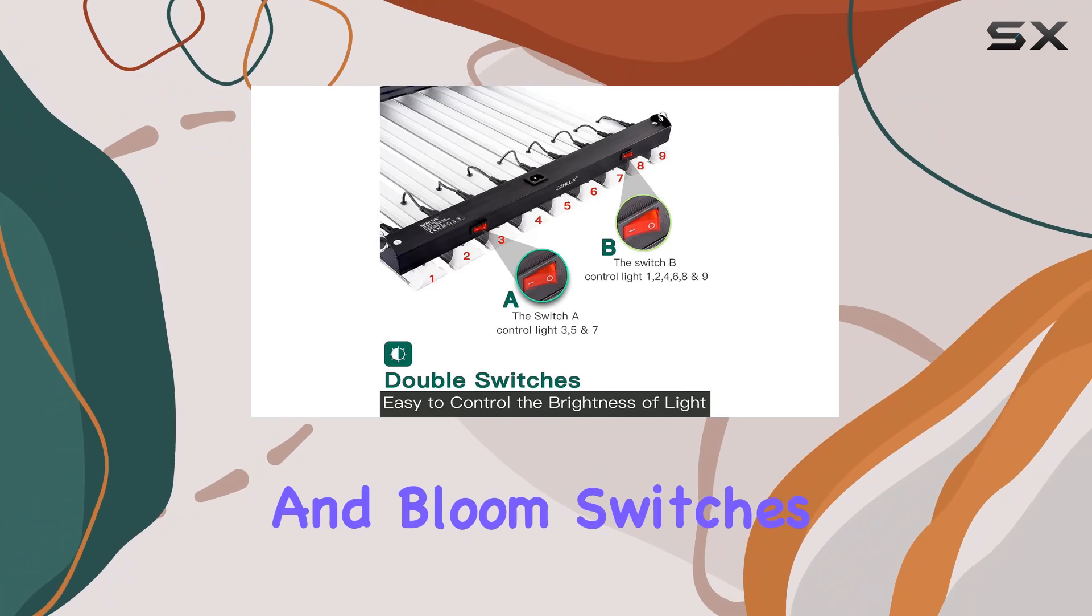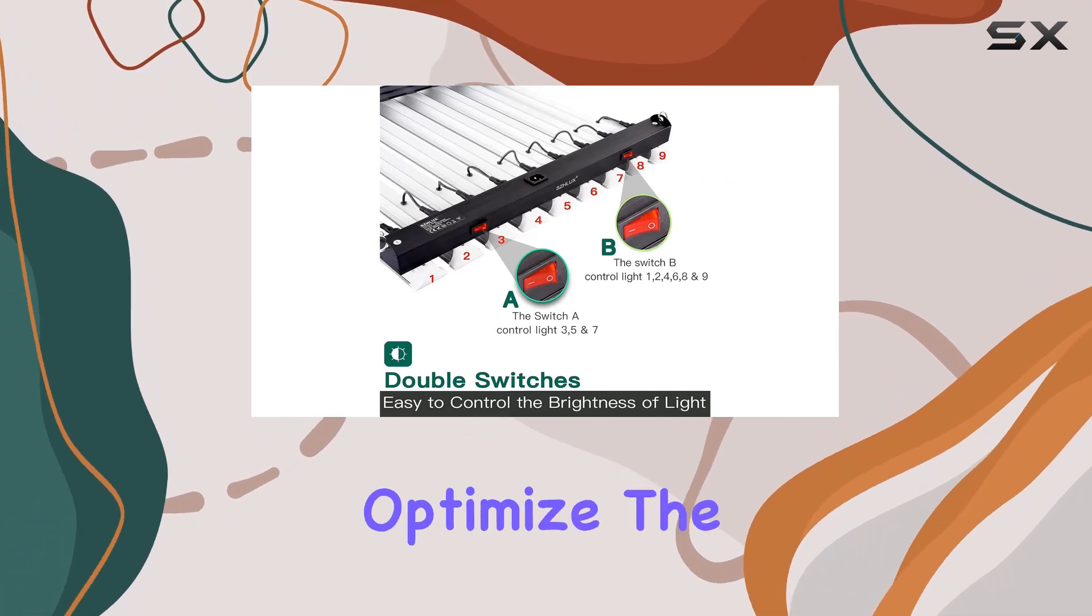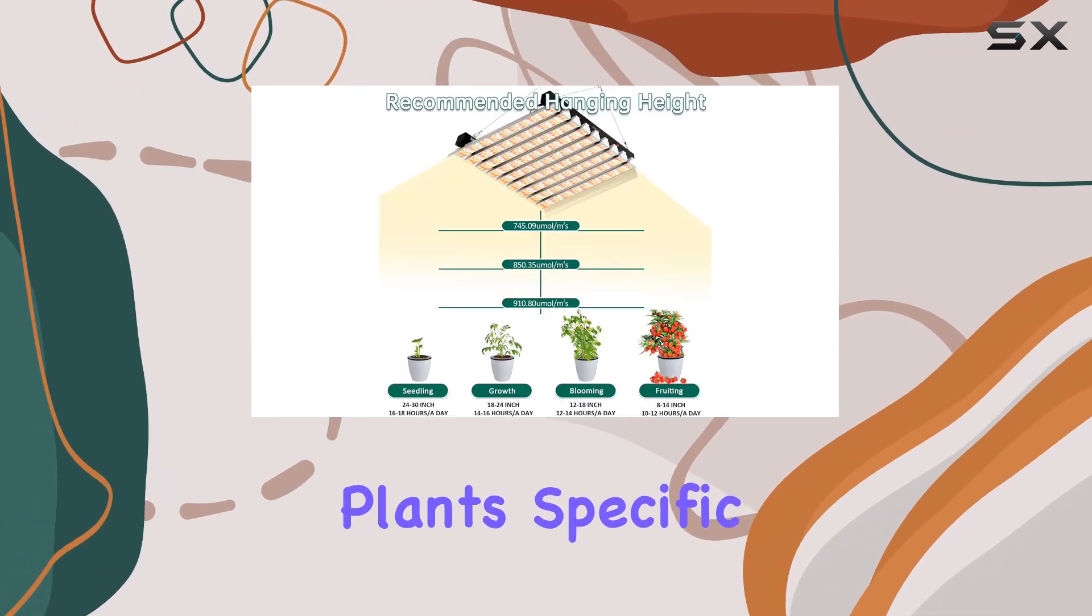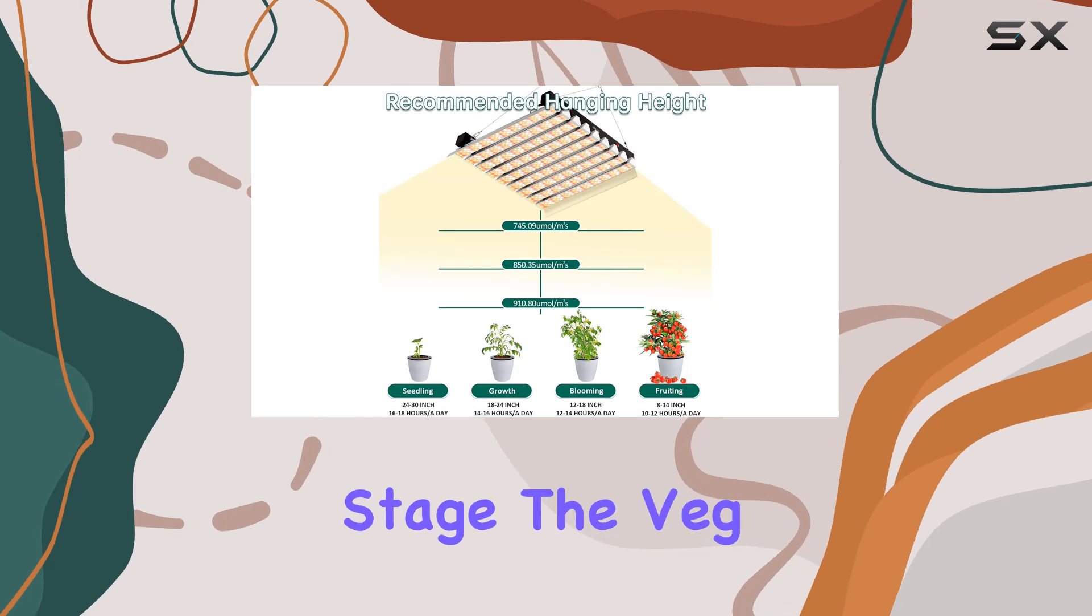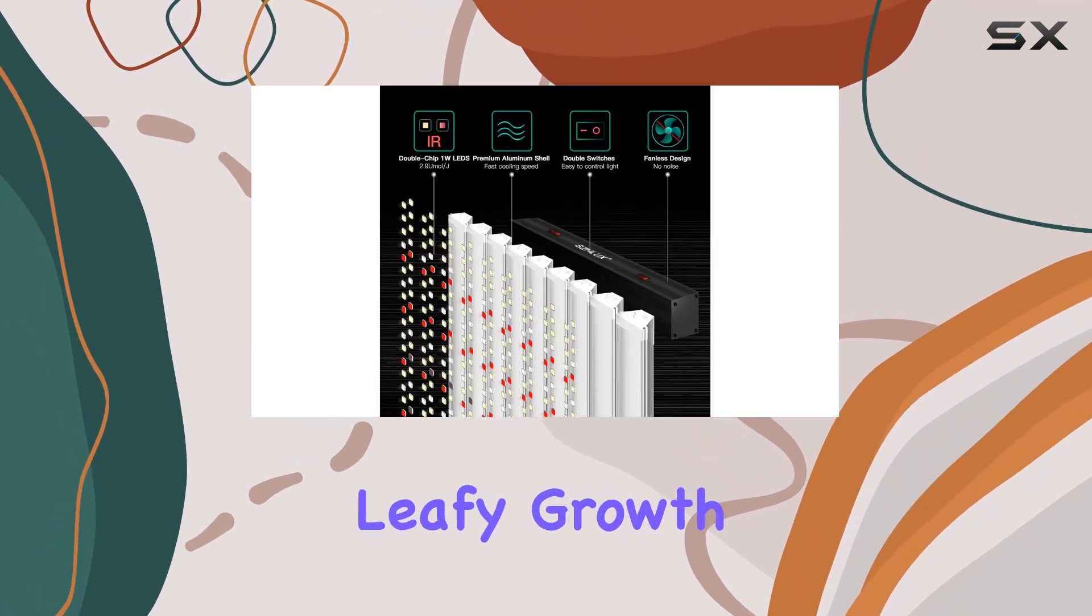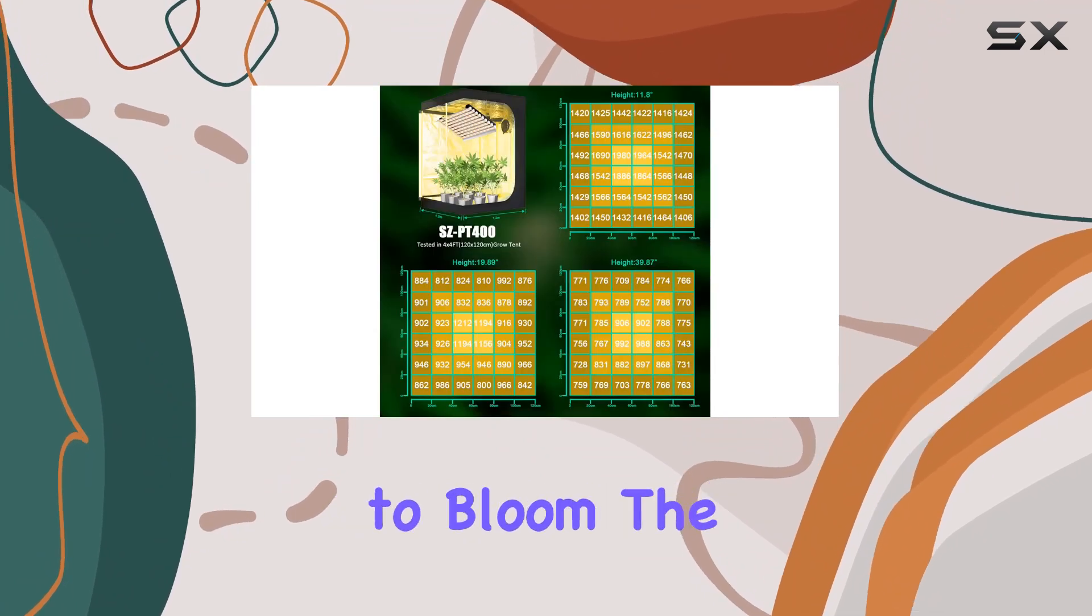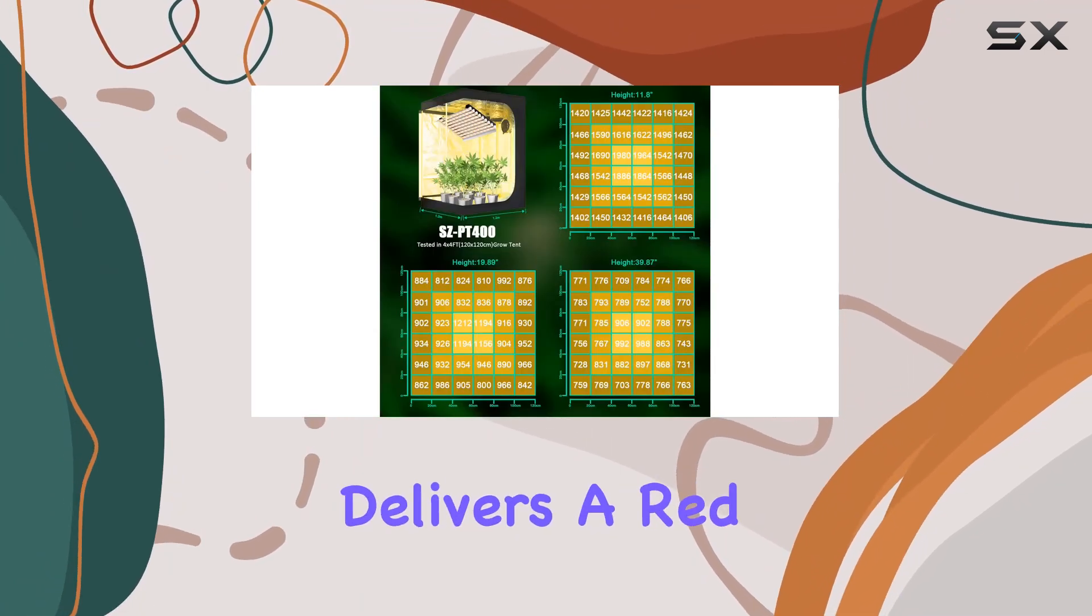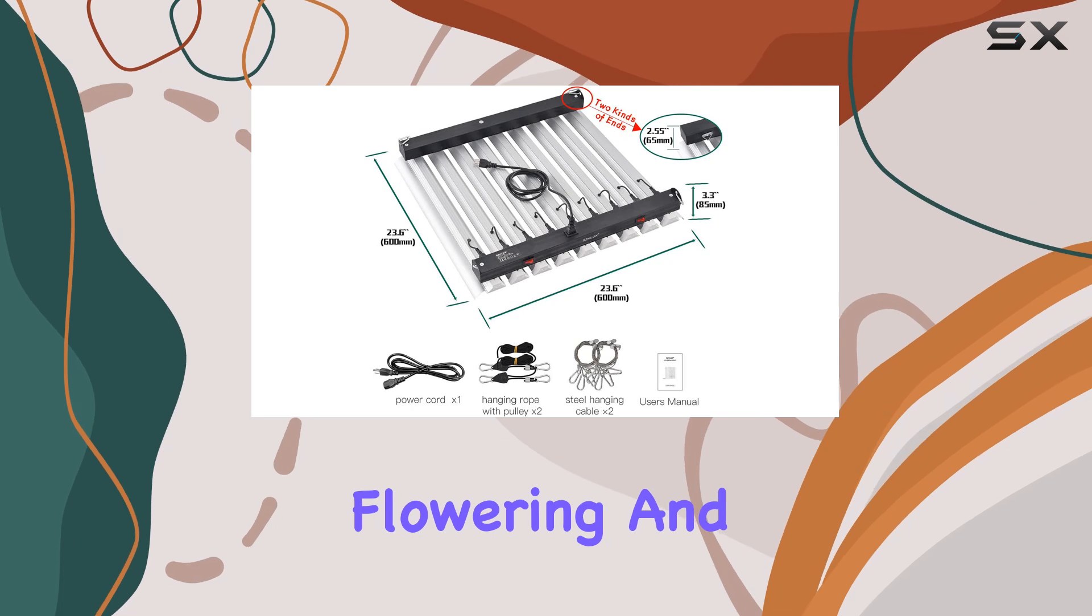The inclusion of both veg and bloom switches allows you to optimize the light output based on your plants' specific needs. During the vegetative stage, the veg switch emits a blue light that encourages leafy growth. When it's time for your plants to bloom, the bloom switch delivers a red light that supports flowering and fruiting.